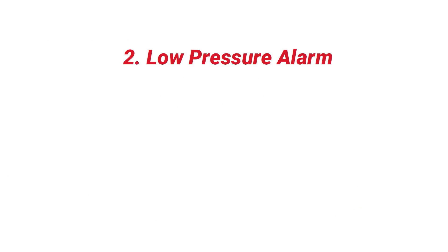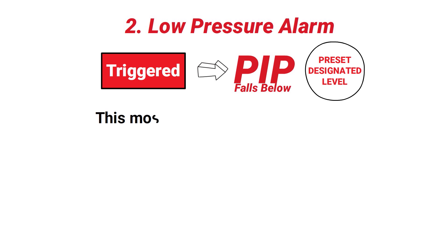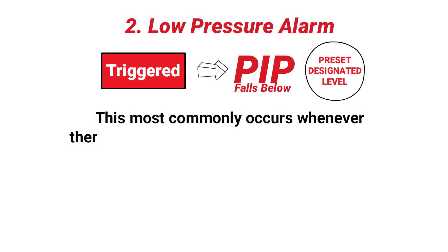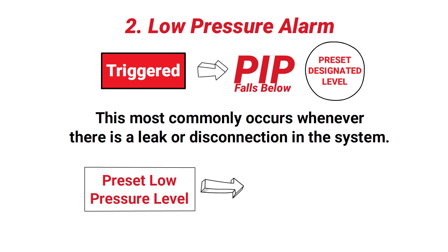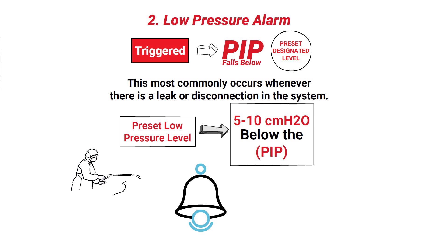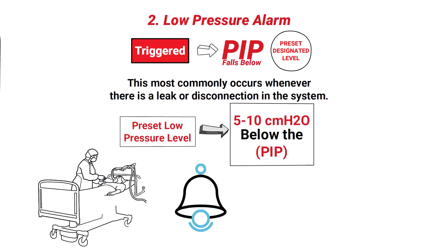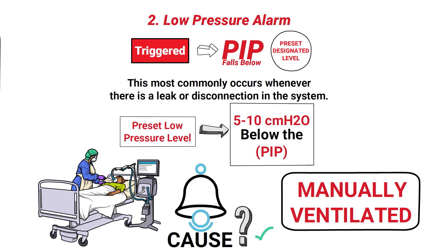Next is the low pressure alarm. A low pressure alarm in mechanical ventilation is triggered whenever the peak inspiratory pressure falls below a preset designated level. This most commonly occurs whenever there is a leak or disconnection in the system. The preset low pressure level is typically set around 5 to 10 cmH₂O below the peak inspiratory pressure. If this alarm is triggered, the respiratory therapist must first ensure that the patient is being ventilated, and if the cause is unknown, the patient should be manually ventilated until the source of the leak is identified.